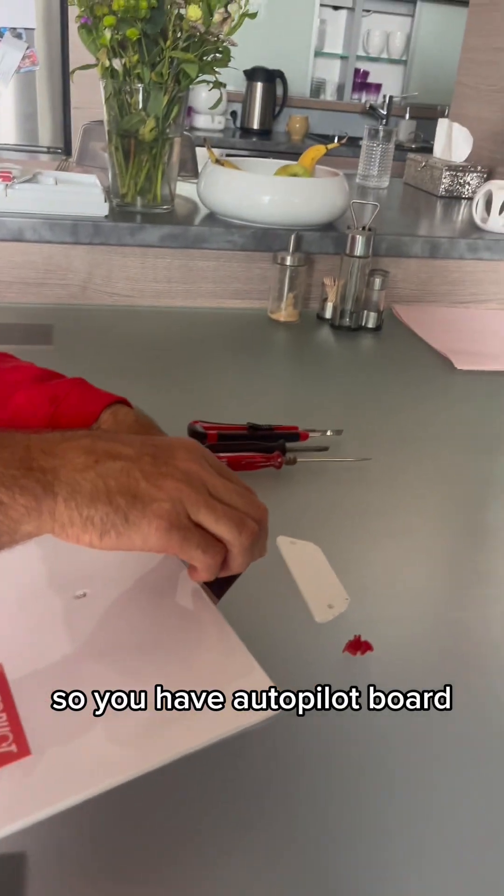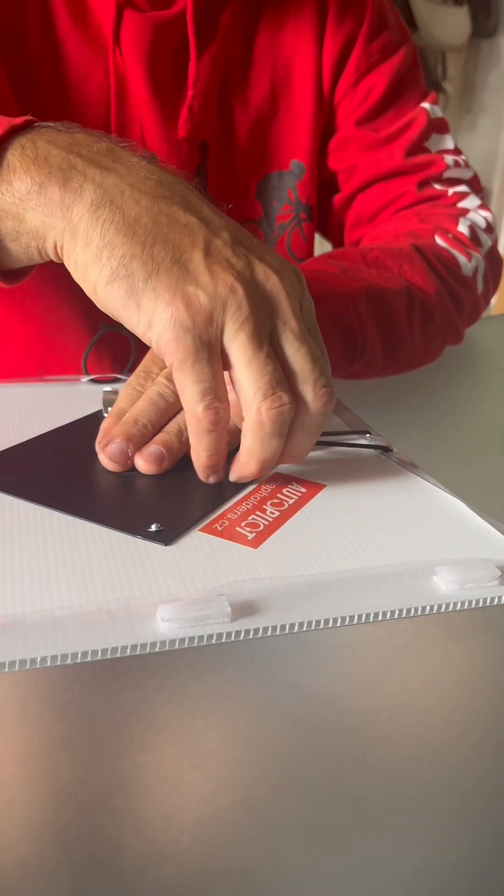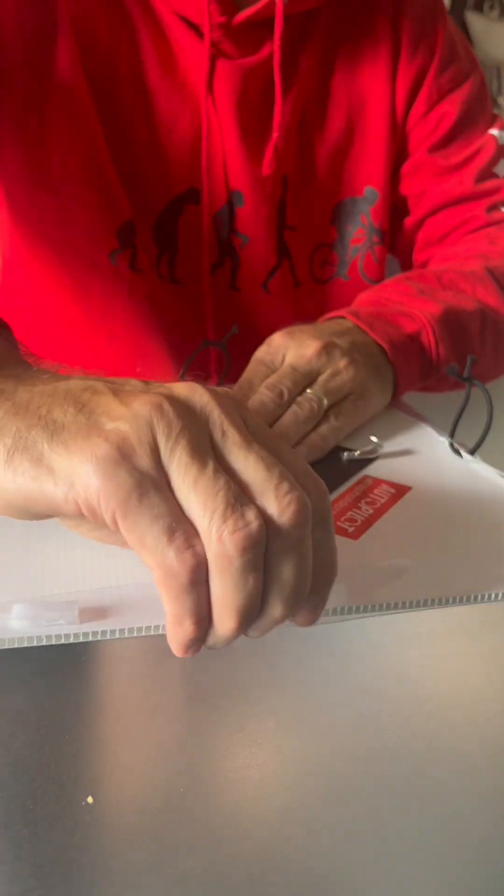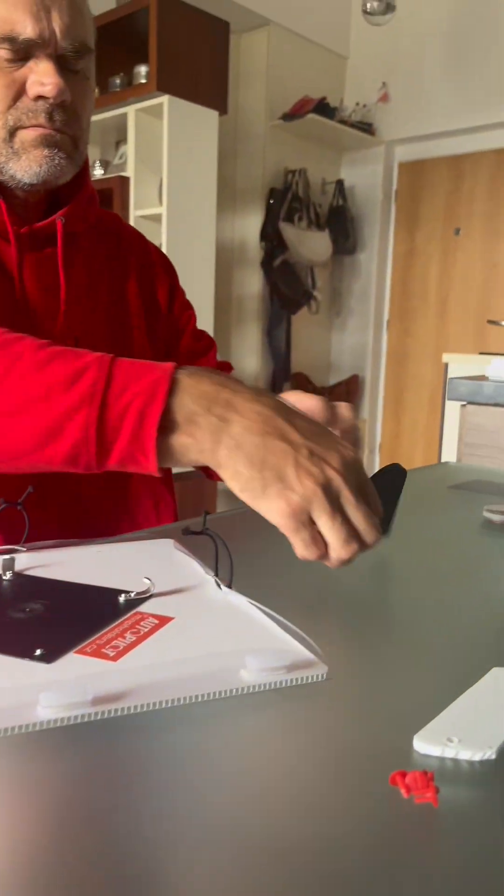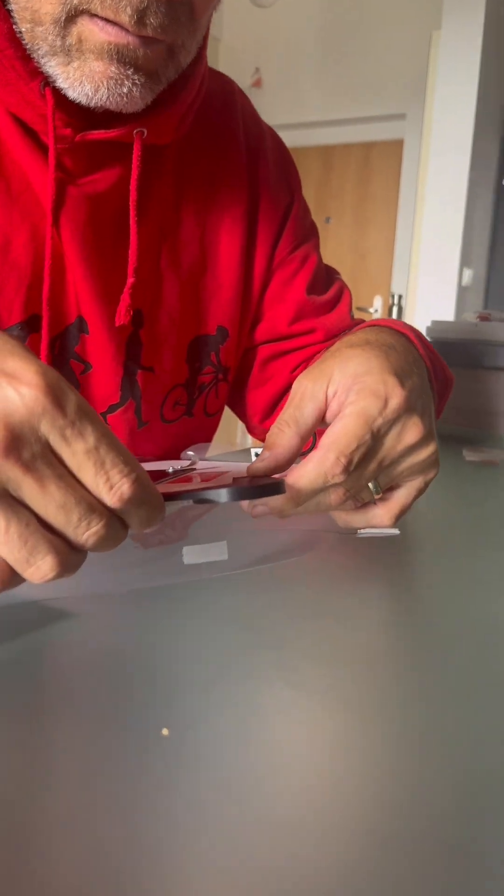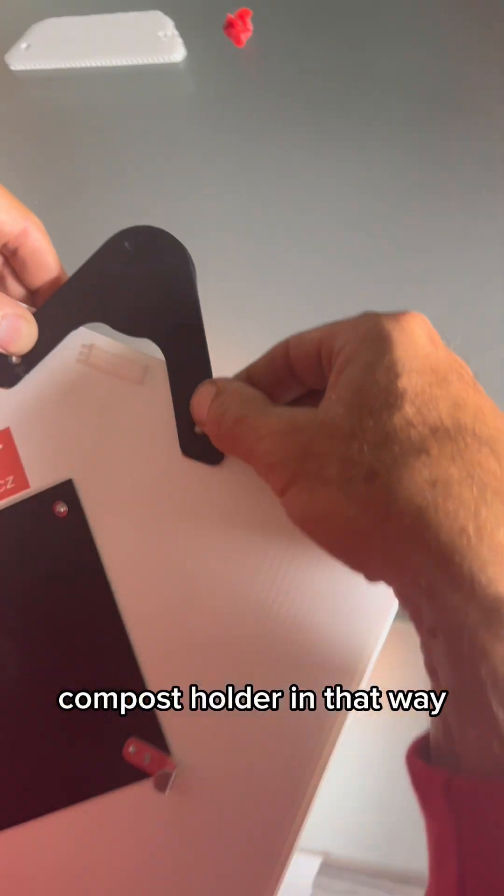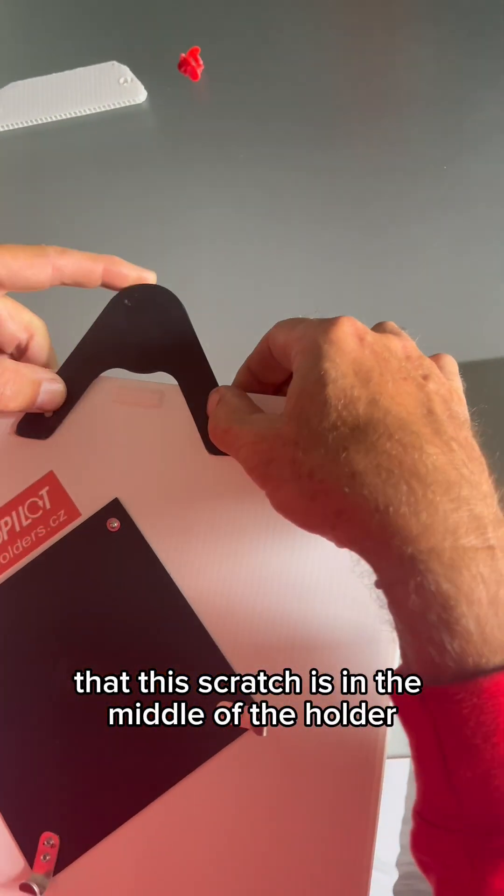So you have the autopilot board. You will remove the film opening here, place the compass holder in that way so that this scratch is in the middle of the holder.